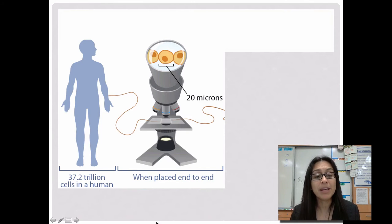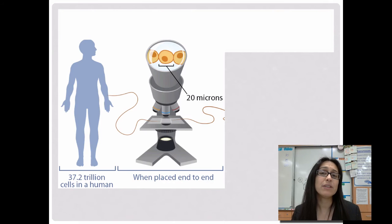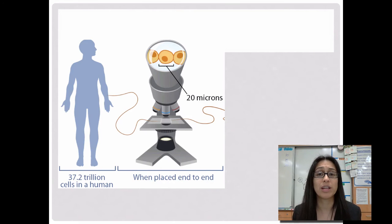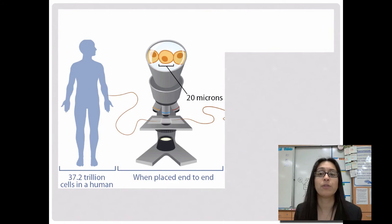In a human being, there's about 37.2 trillion cells that make up a human. That's a lot. So every single one of these cells, in order for it to really work as one single organism, they have to be able to communicate with each other, and it has to be effective communication in order for things to really work out.